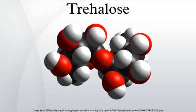Trehalose forms a rhomboid crystal as the dihydrate and has 90% of the calorific content of sucrose in that form. Anhydrous forms of trehalose readily regain moisture to form the dihydrate, and can show interesting physical properties when heat treated. Trehalose aqueous solutions show a concentration-dependent clustering tendency, owing to their ability to form hydrogen bonds between one another, self-associating in water to form clusters of various sizes.